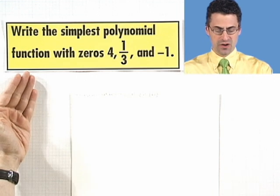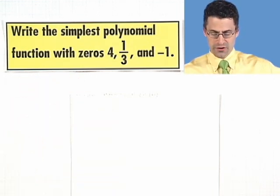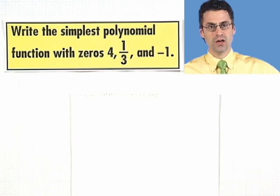Let's take a look with a simple example so you can see the connection. So here's a challenge. Let's write the simplest polynomial function with zeros at 4, 1/3, and negative 1.